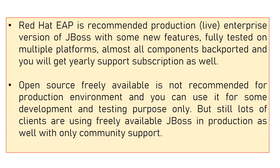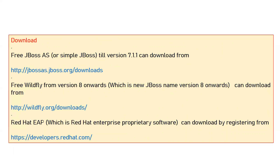As for recommendations, in production it is always recommended — even by Red Hat — to go with the EAP version for your live environment and the enterprise version, because you get 24/7 support from Red Hat engineers. If you get stuck in a production environment due to product-related bugs, you may not get prompt support with community software, and your live environment could go down. Open source is freely available, but it is only for development and testing purposes. When it comes to production, you should go with the Red Hat EAP JBoss version. To download older community versions, go to jbossas.jboss.org downloads. After version 7.1.1, it was renamed WildFly, so for that you go to wildfly.org/downloads for version 8 onward.